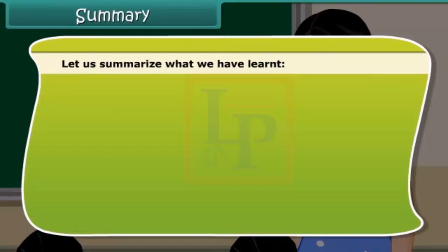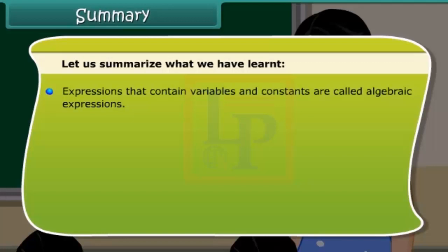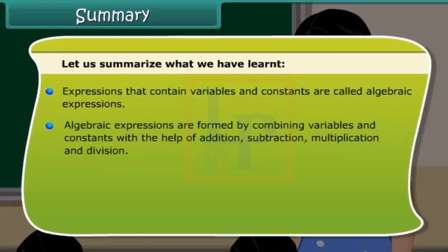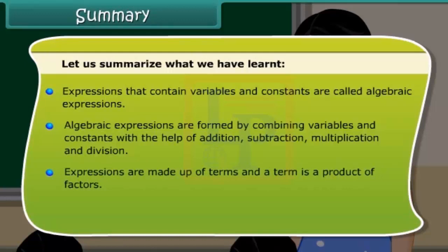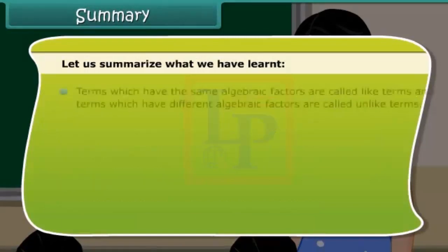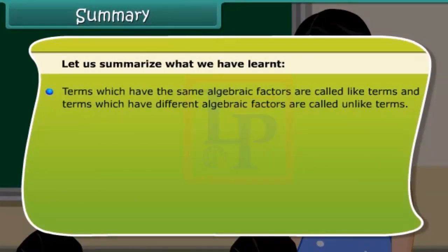Let us summarize what we have learnt. Expressions that contain variables and constants are called algebraic expressions. Algebraic expressions are formed by combining variables and constants with the help of addition, subtraction, multiplication and division. Expressions are made up of terms and a term is a product of factors. The coefficient is the numerical factor in the term. Terms which have the same algebraic factors are called like terms and terms which have different algebraic factors are called unlike terms. Any expression with one or more terms is called a polynomial. Only like terms are added or subtracted during addition or subtraction of algebraic expressions.